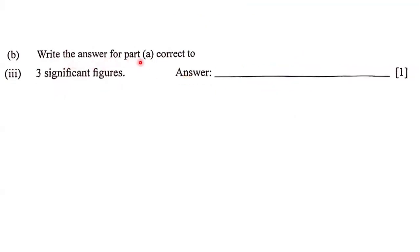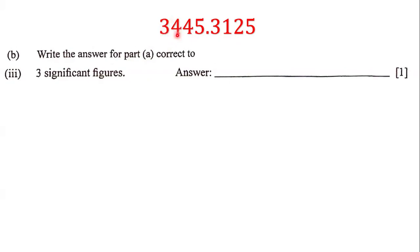Next, the question states: write the answer for part A correct to three significant figures. All non-zero digits are significant, so this is our first significant figure, this is the second, and this 4 is the third significant figure. We circle this 4, then underline the number to the right of it, which is 5. Since it's 5 or more, we round up and add one to 4, giving us 5.